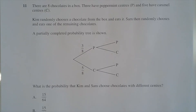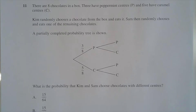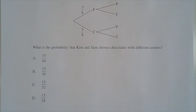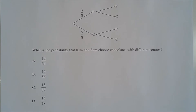Question 11. There are eight chocolates in a box. Three have peppermint centres, P, and five have caramel centres, C. Kim randomly chooses a chocolate from the box and eats it. Sam then randomly chooses and eats one of the remaining chocolates. A partially completed probability tree is shown. What is the probability that Kim and Sam choose chocolates with different centres?